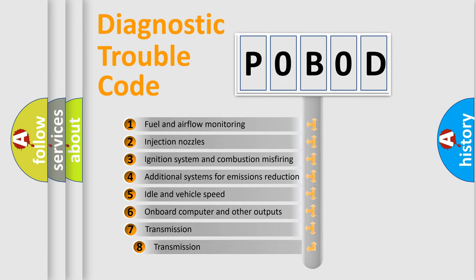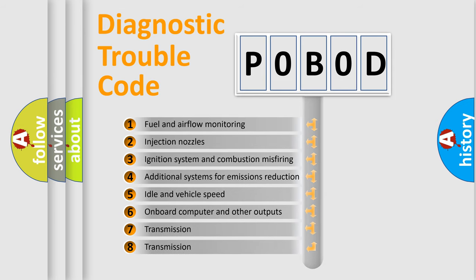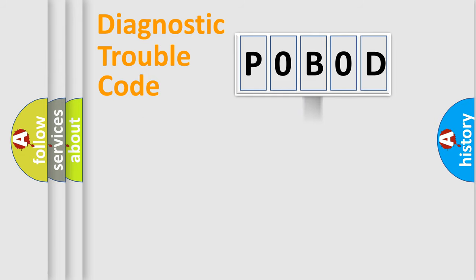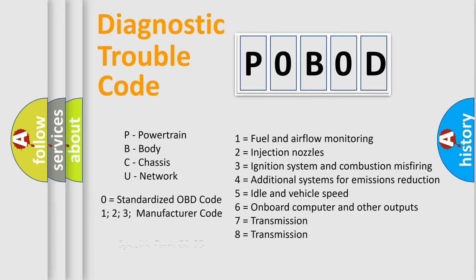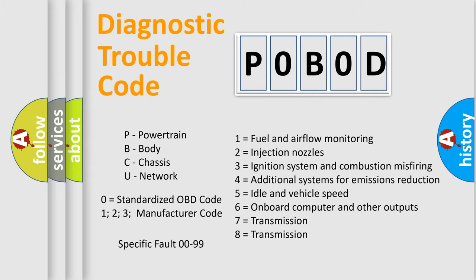The third character specifies a subset of errors. The distribution shown is valid only for the standardized DTC code. Only the last two characters define the specific fault of the group. Let's not forget that such a division is valid only if the second character code is expressed by the number zero.